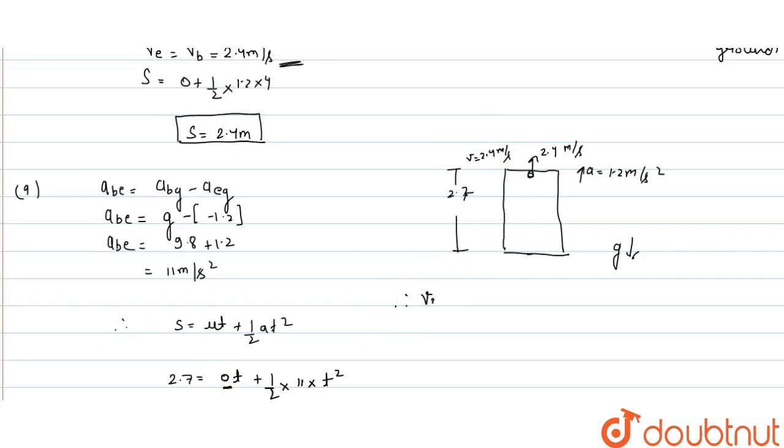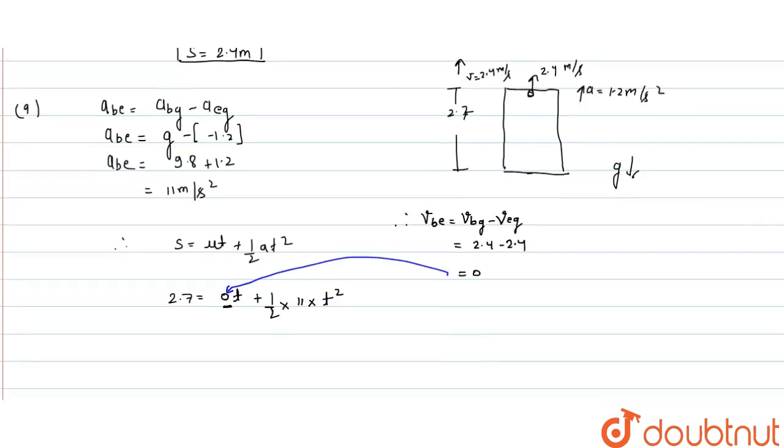Velocity of bolt with respect to elevator equals velocity of bolt with respect to ground minus velocity of elevator with respect to ground equals 2.4 minus 2.4 equals 0, which I have shown here. You can see here I have added value here.